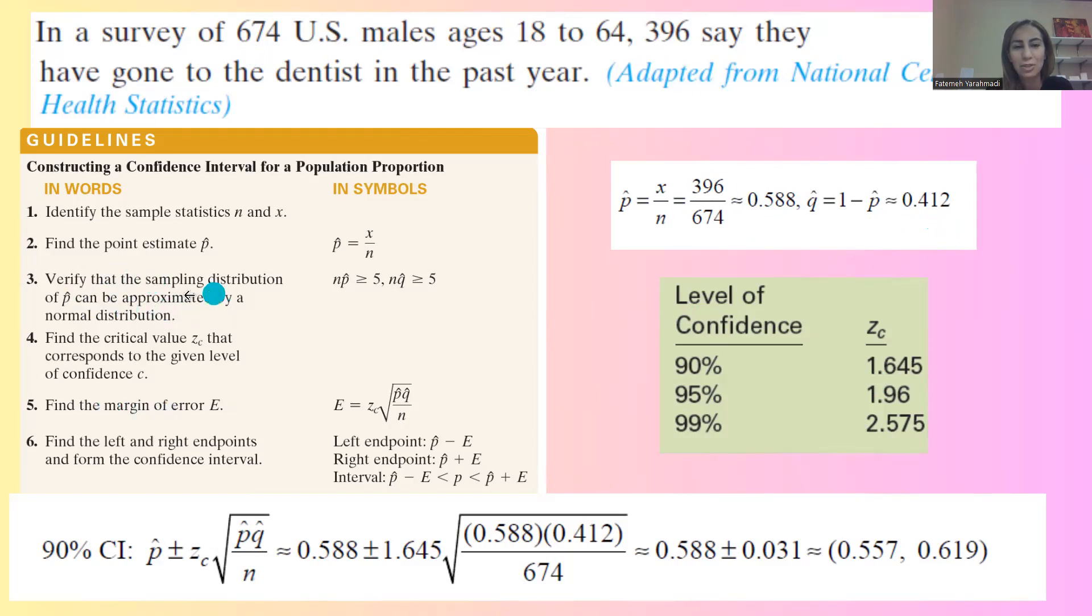Verify that the sampling distribution of p hat can be approximated by a normal distribution. These are the basic algebra that you can easily calculate. n times p hat must be larger than or equals to 5. n times q hat must be larger than or equals to 5.